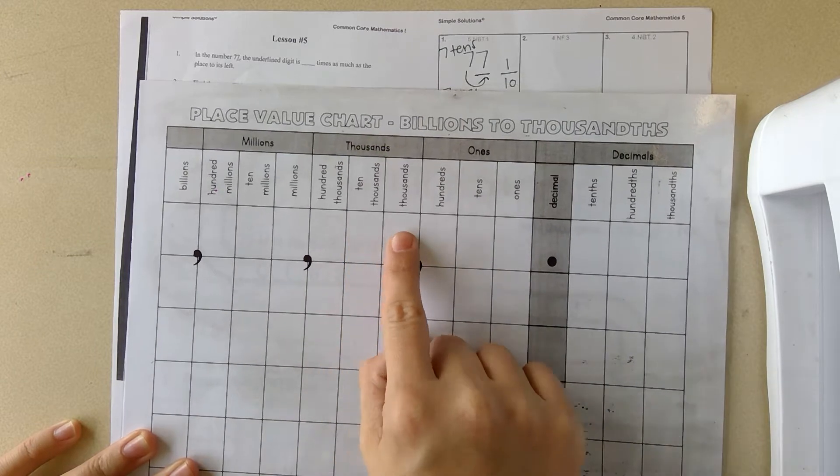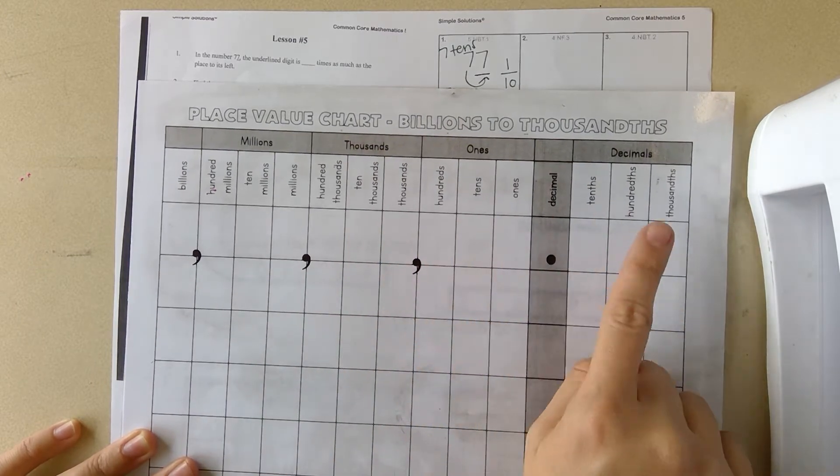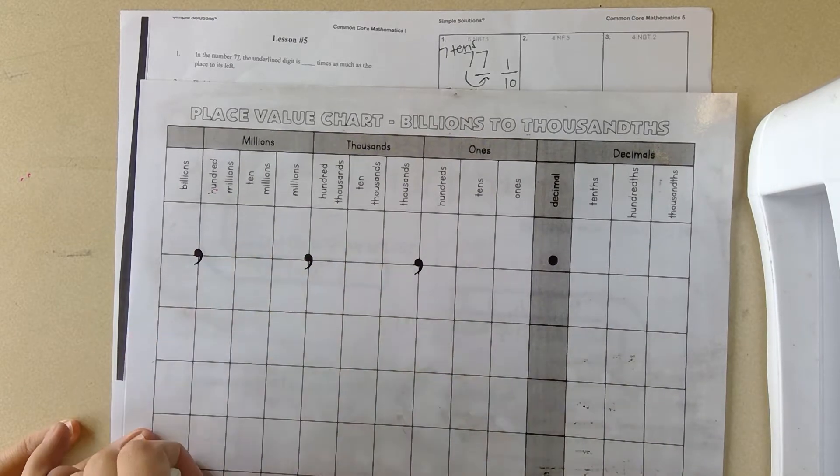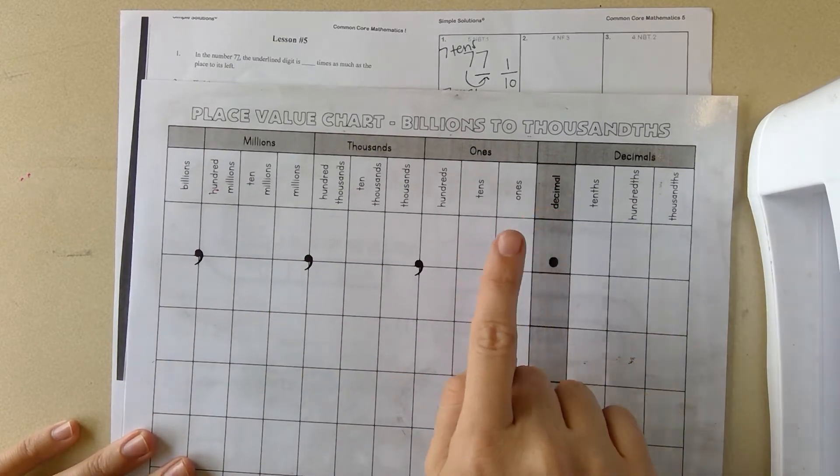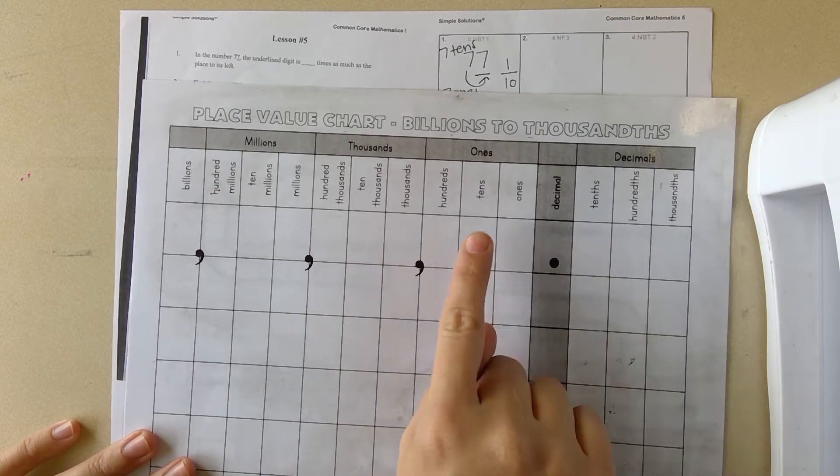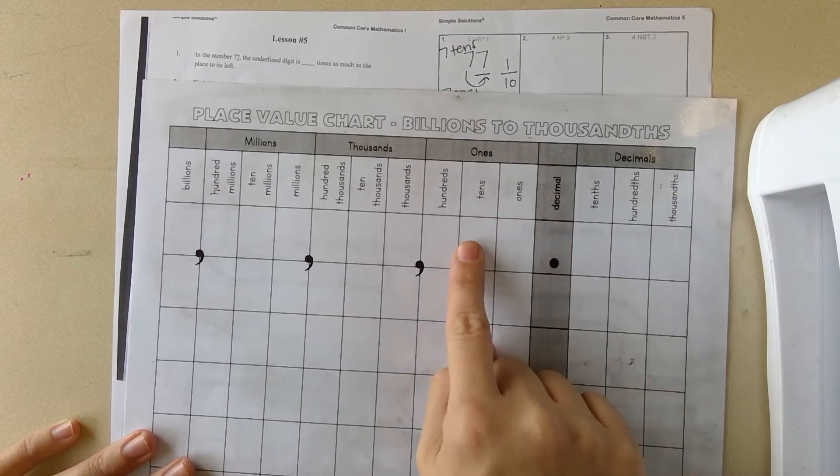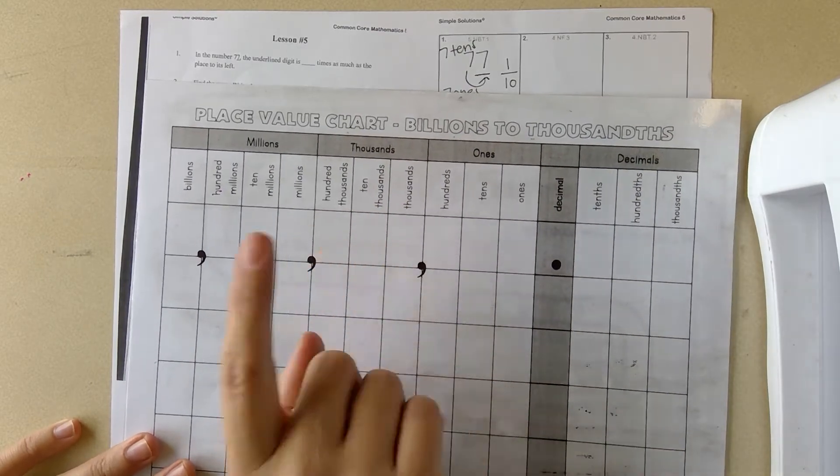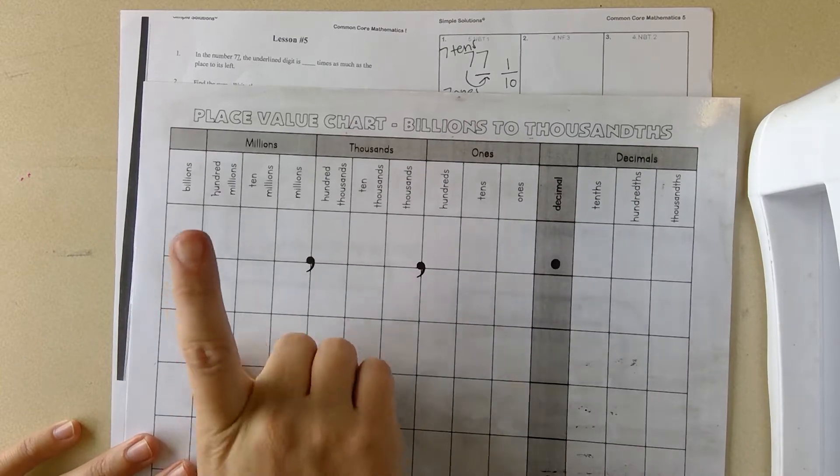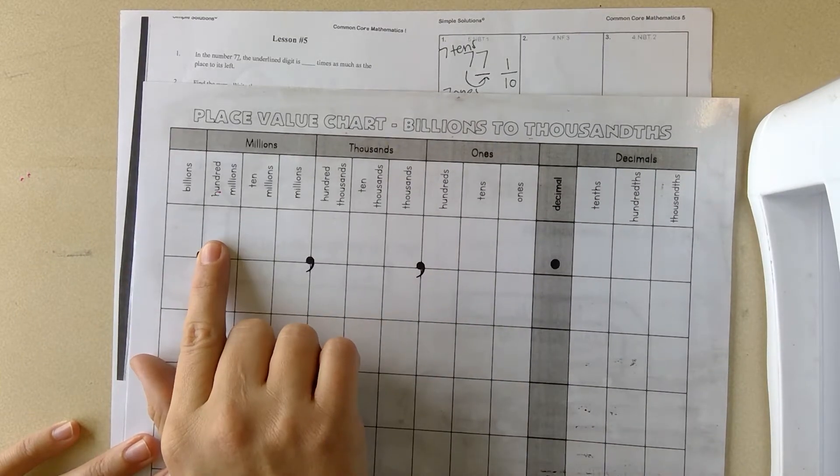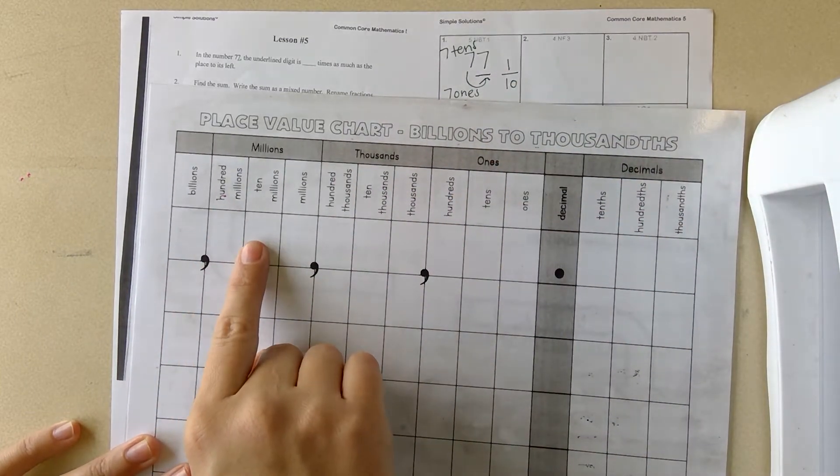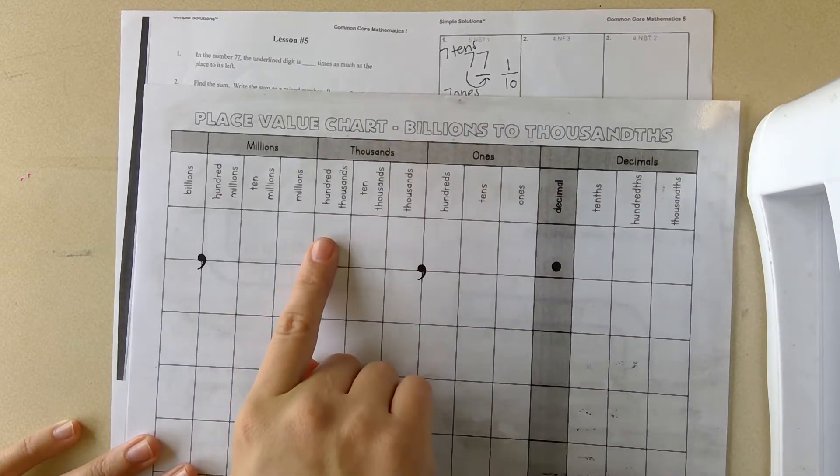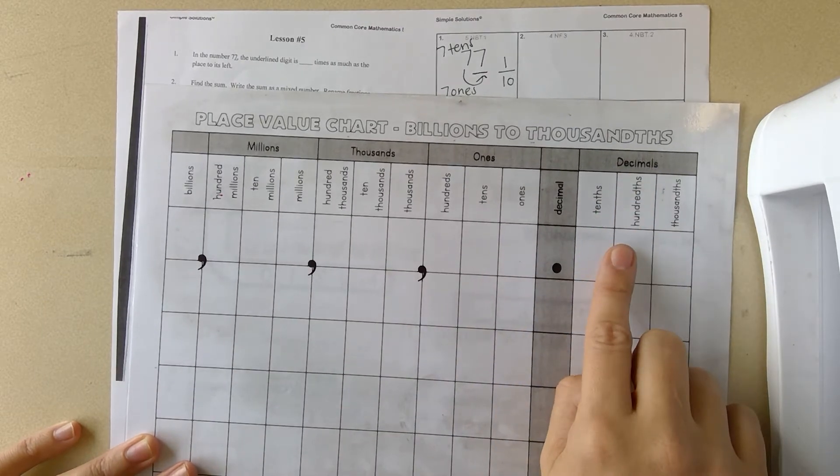When you go to the left from the right, it is ten times as much. Ten is ten times as much as one, a hundred is ten times as much as ten. One times ten is ten, ten times ten is a hundred, a hundred times ten is a thousand. Whereas the other way, if you went from a hundred million times one-tenth would be ten million, ten million times one-tenth would be a million, and so on. That would even go with your decimals.